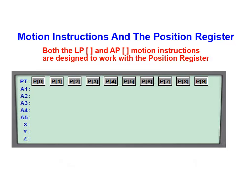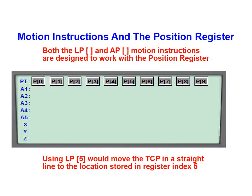As an example, if we use position index 5 with the Linear Motion instruction, the tool center point would move from its current location in a straight line to the location specified in the P5 position register index location.